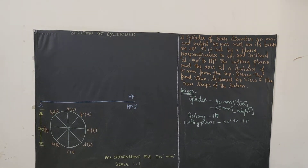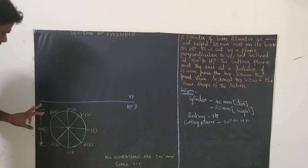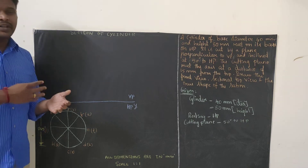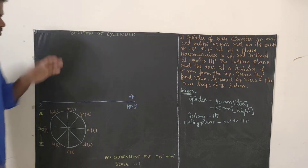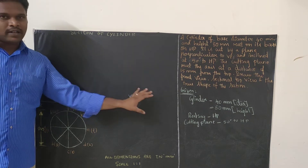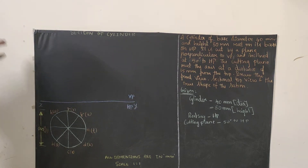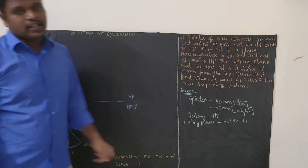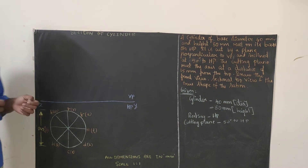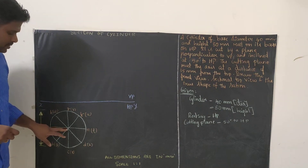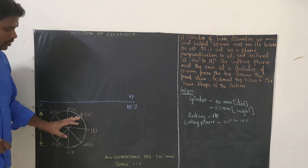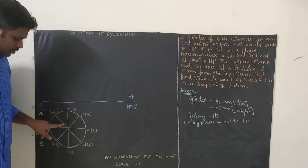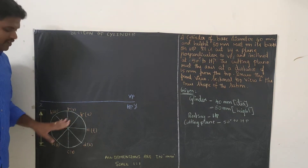First, draw the reference line and write X, Y — VP above, HP below. Always draw the diagram in portrait for section of solids, not landscape. The base diagram is a circle of diameter 40 mm, so take radius 20, keep it as center, draw the circle, and divide it into eight equal parts of 45 degrees each.